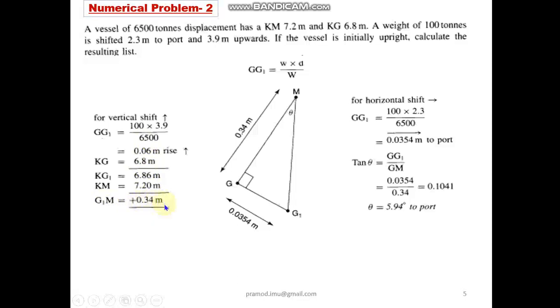Now if I take the horizontal shift, your GG_1, again please don't confuse, this is the horizontal component, 2.3 meters horizontal. So weight 100 into 2.3 by 6500 will get 0.30354 meters. So tan theta is nothing but GG_1 by G_1M or GM. So I substitute these values and I get the final answer as 5.94 degree, and because the mass has shifted to the port, the angle of list is towards port side.